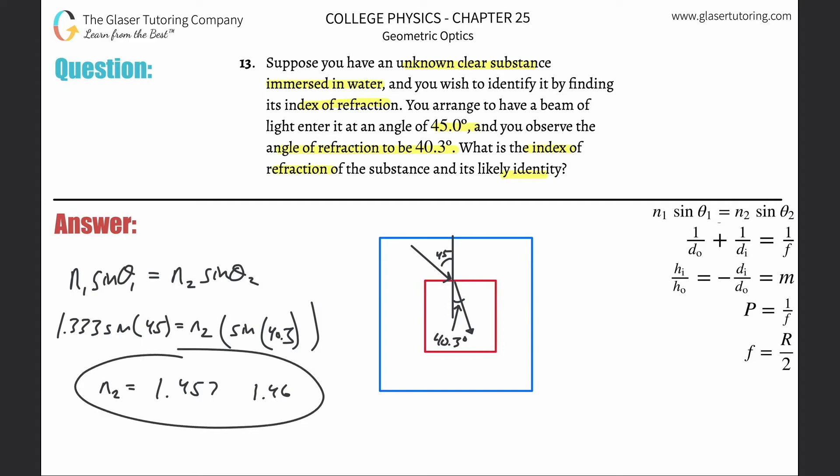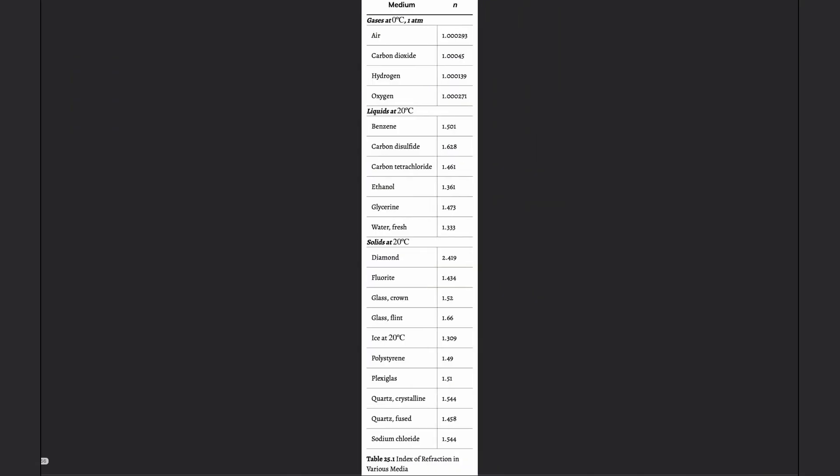So now what we got to do is go look this up on the table. 1.457—what do you think it is? Well, maybe 1.4... Let's see, quartz looks pretty close. 1.457—do we see anything closer? Not really, so I guess it'll be quartz, fused quartz.